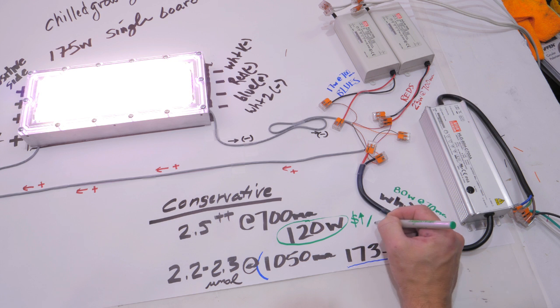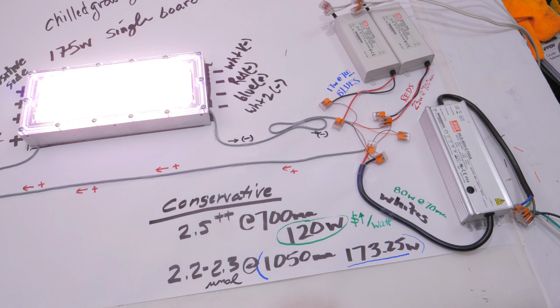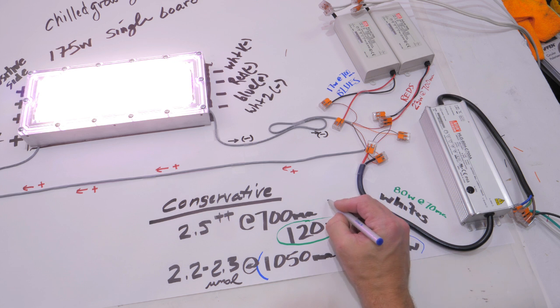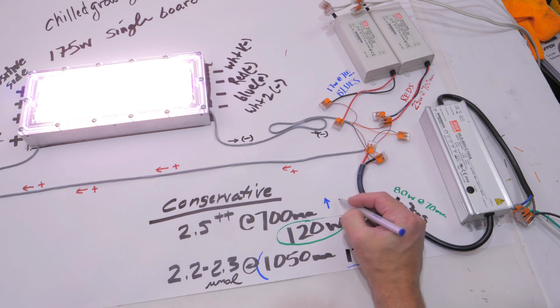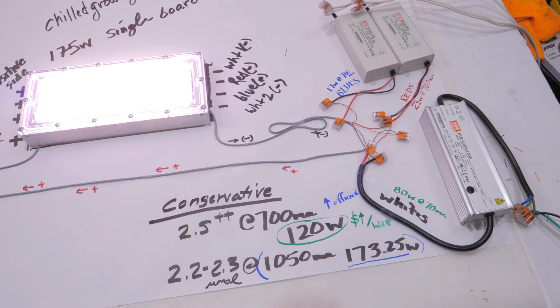He's publishing around 2.3 micromoles per joule at the 1050, and at 700 you're getting about 2.5. Still probably the most impressive numbers I'm seeing right now in 2017. There are some ways to kind of tweak it and maybe get a little closer to like that 2.7, but again tentative numbers, and I'm sure he'll publish all the lab numbers when everything is set in stone.